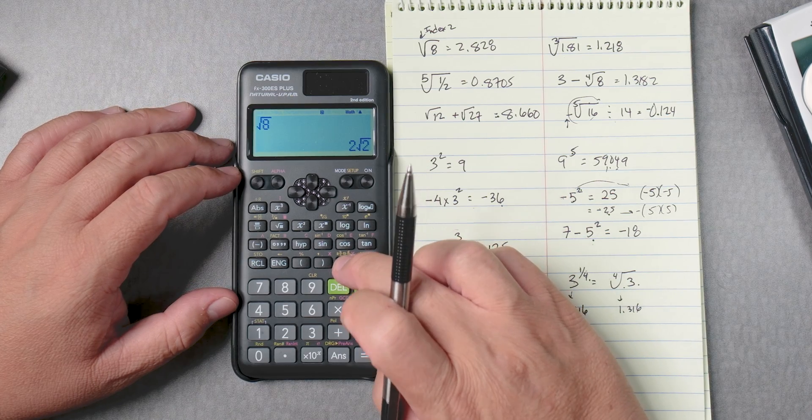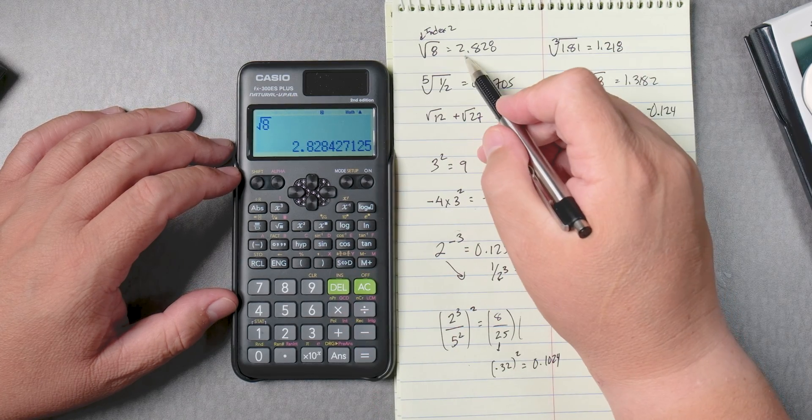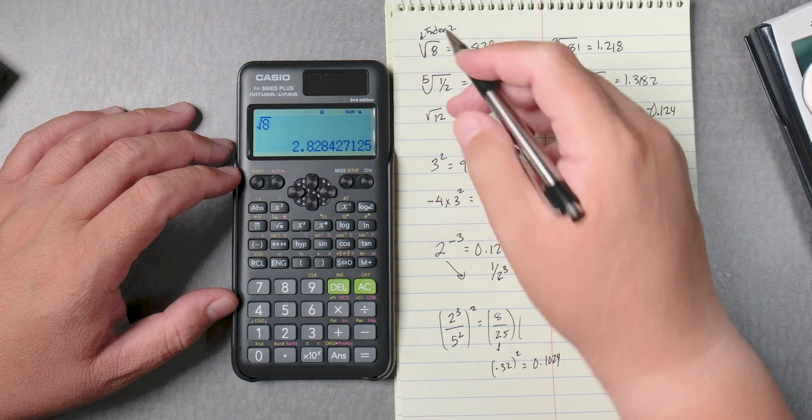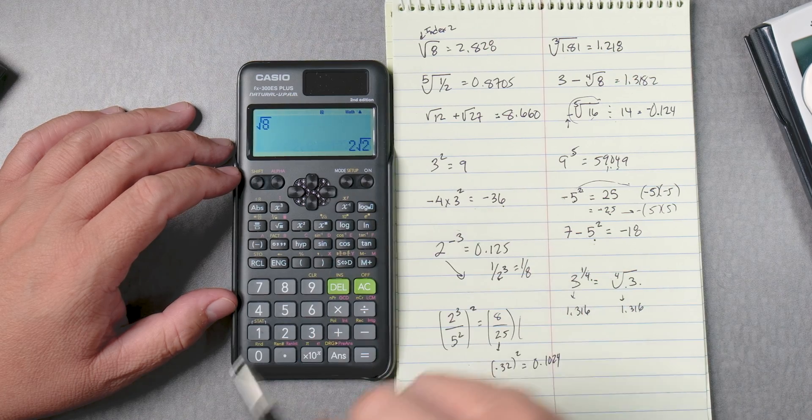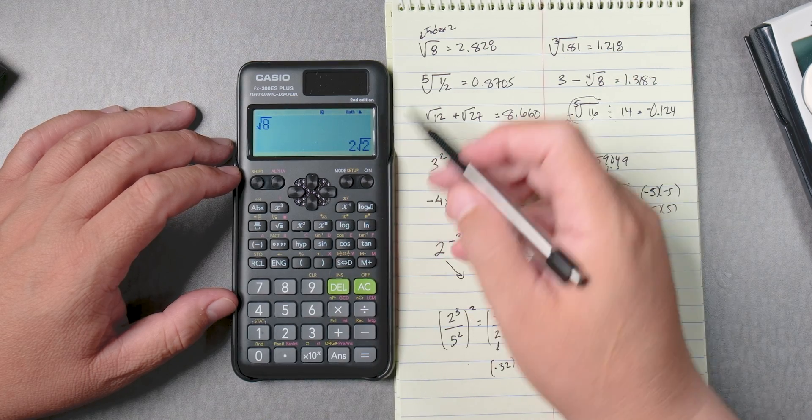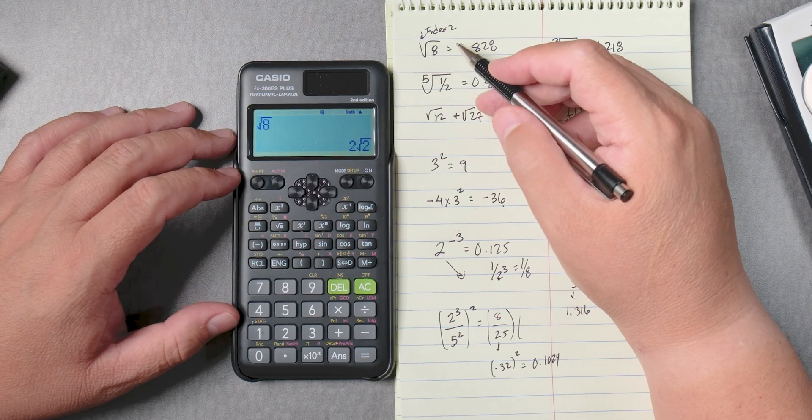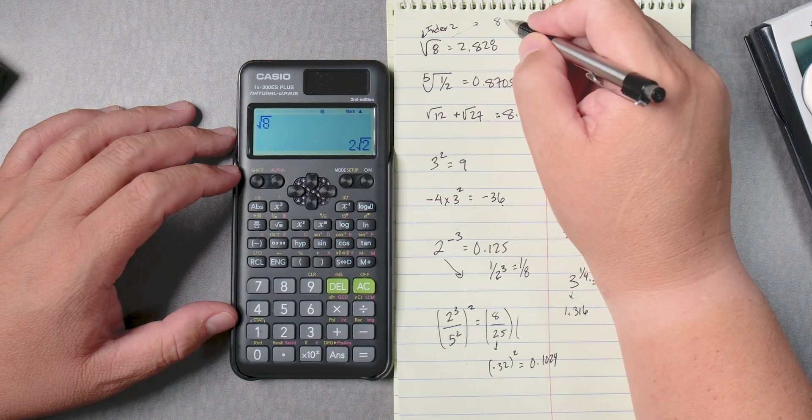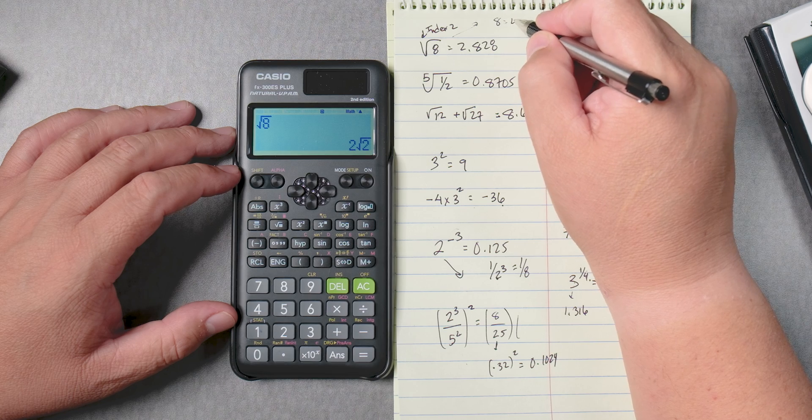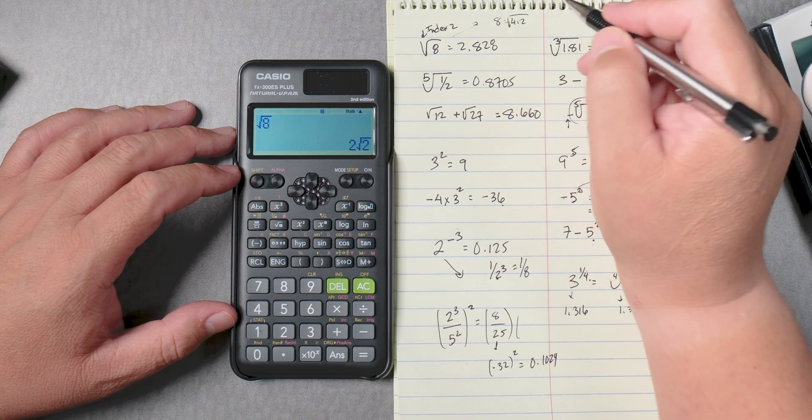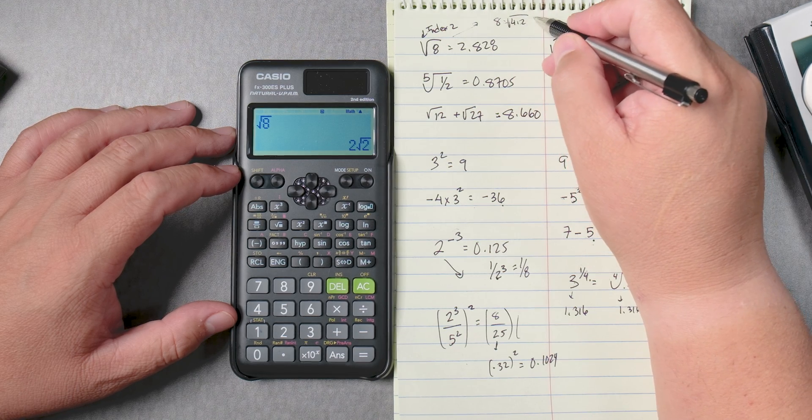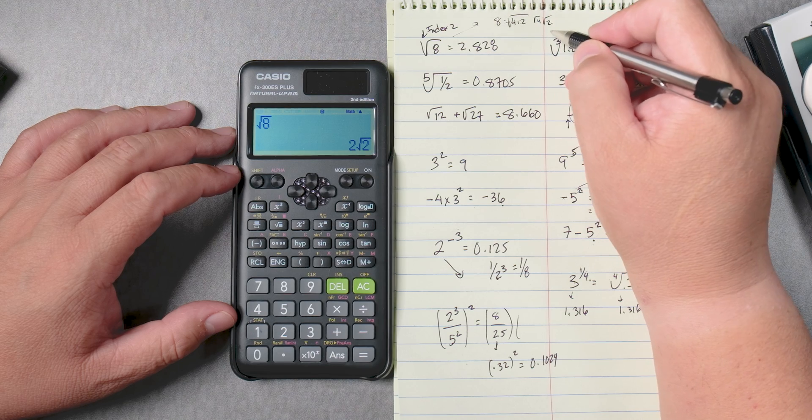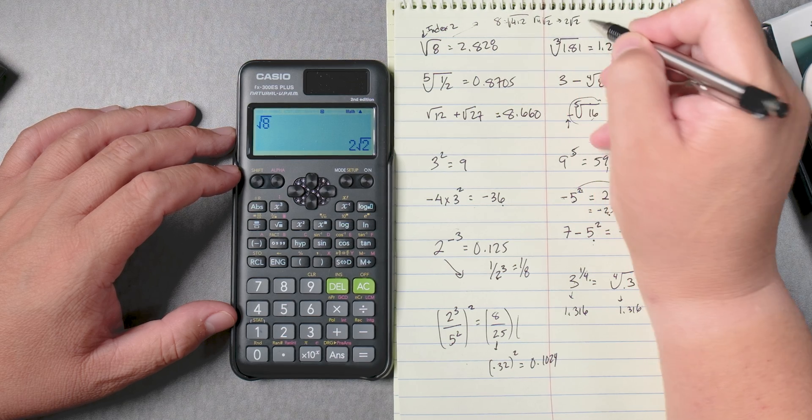If you press SD, it will give you 2.828, and then if you press SD again, it gives you 2√2. Why did it do that? Because it's reducing. In this case, 8 can be equal to 4 times 2, and when you take the square root of 4 times 2, the square root of 4 is 2, so you get 2√2.